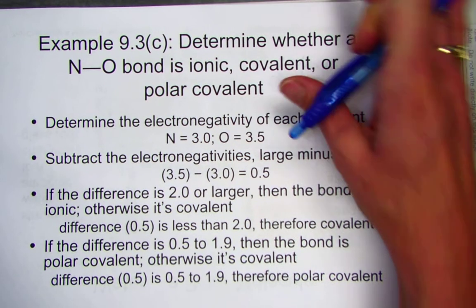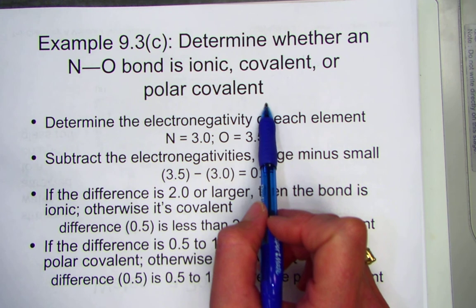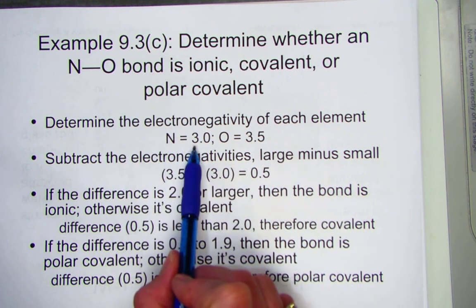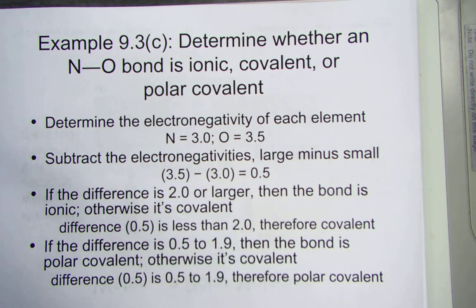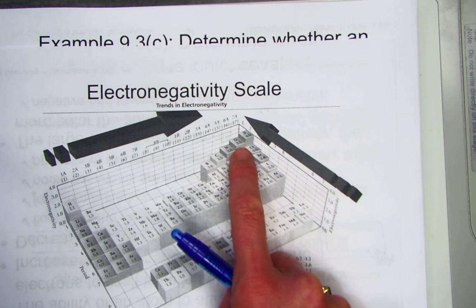To determine whether an NO bond is ionic, covalent, or polar covalent. Our example has us find, using our chart, the electronegativities for each of the elements. Nitrogen is exactly 3.0, oxygen is 3.5.